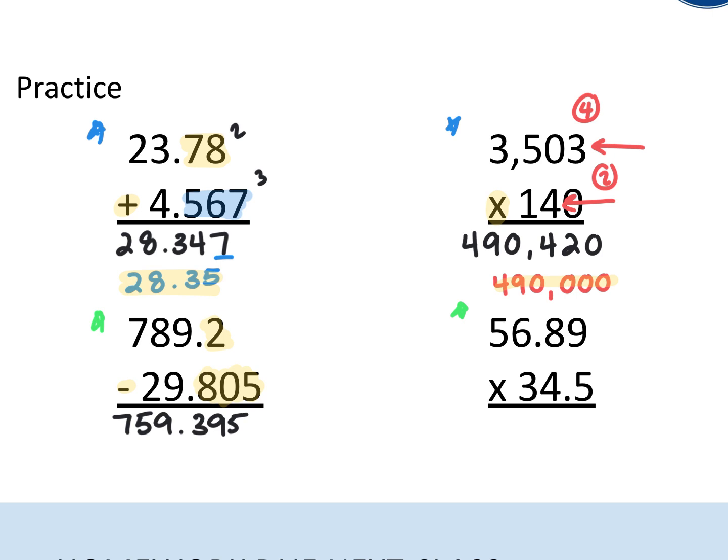Because one is the smallest, I'm going to take my answer, 759, and simplify it to the one decimal place. Because the nine is bigger than five, I can bump my three up to four to give me a final answer of 759.4.